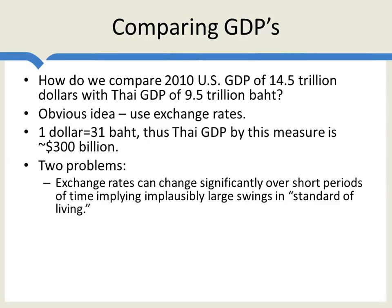The first is that exchange rates swing a lot, and this implies implausibly large swings in the standard of living. So it wouldn't be at all impossible, for example, for the Thai-to-U.S. dollar-to-baht exchange rate to swing by 30% within a couple of months, either up or down. But this just implies much bigger changes in the standard of living in these two countries than is really very plausible.